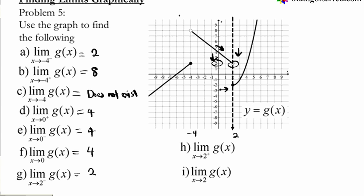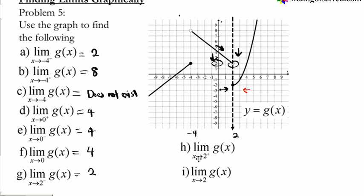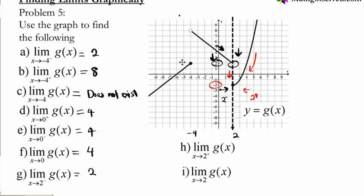Now, approaching from the right — this is part H, the right-hand limit. You notice the graph is also going down from the right side. The y value is decreasing until it hits this partition. What value is it approaching as x approaches 2 from the right? It is approaching this y value here — it gets as low as this value and then it connects to the other function. So your right-hand limit is negative 2.